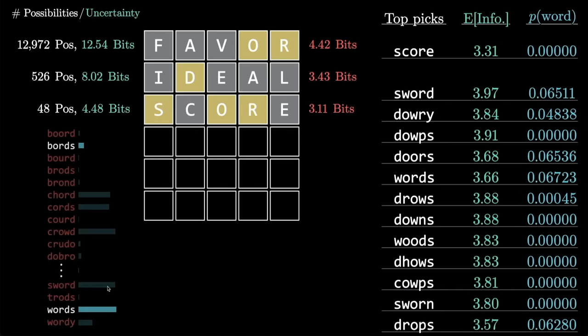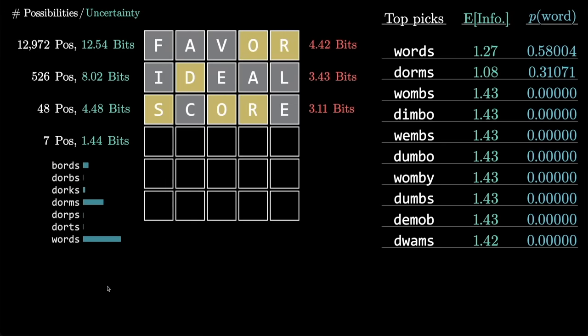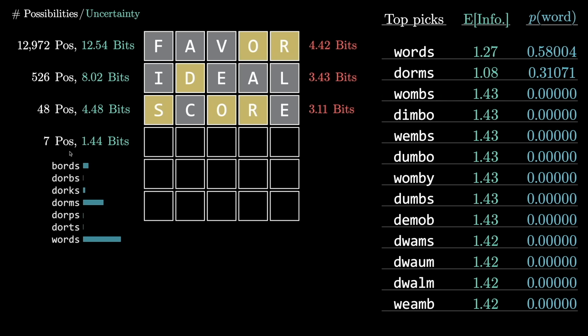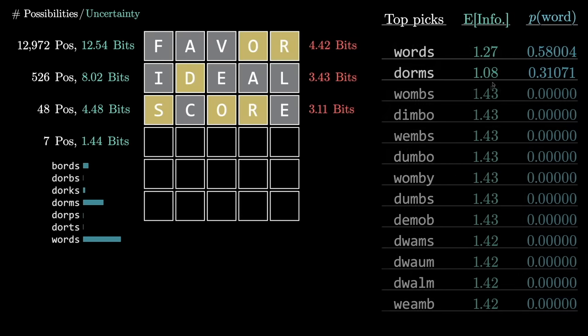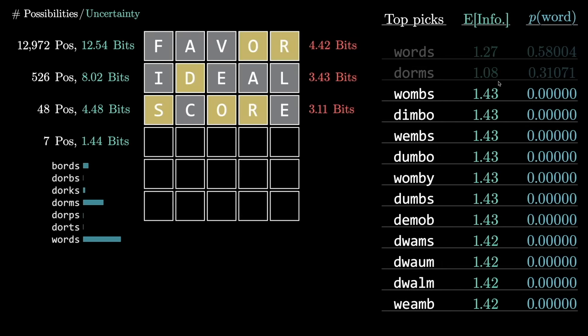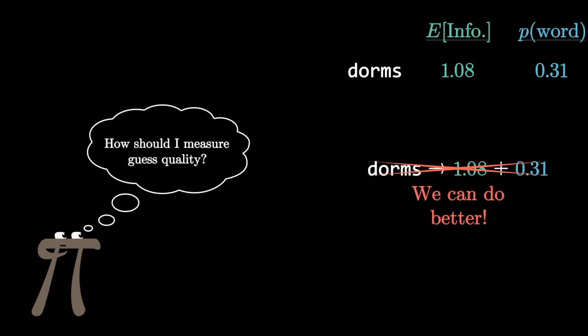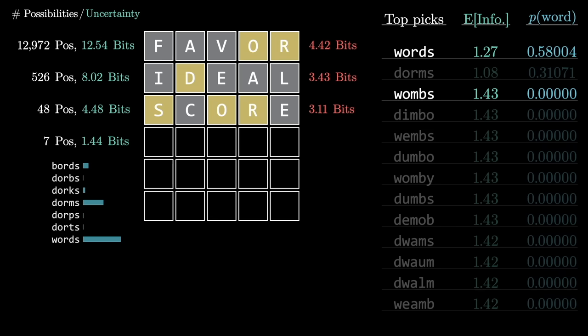By the fourth guess, if you look over at its top picks, you can see it's no longer just maximizing the entropy. So at this point, there's technically seven possibilities, but the only ones with a meaningful chance are dorms and words. And you can see it ranks choosing both of those above all of these other values that, strictly speaking, would give more information. The very first time I did this, I just added up these two numbers to measure the quality of each guess, which actually worked better than you might suspect, but it really didn't feel systematic. And I'm sure there's other approaches people could take, but here's the one I landed on.